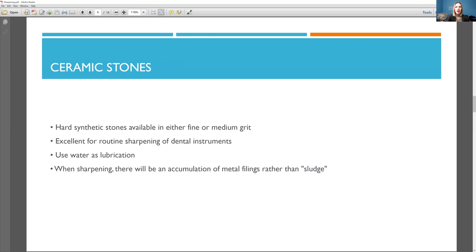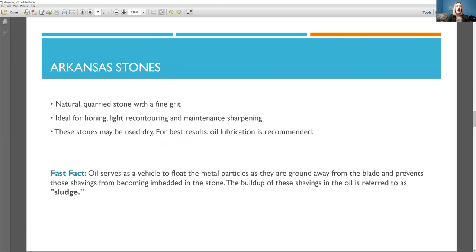Okay. So if you're confused with that, please let me know. The Arkansas, if I'm saying that right, stones. So natural with a fine grit, ideal for honing, light recontouring, and maintenance sharpening. These stones may be used dry. So you could use them dry or with oil. So there's two different types there. So you have to know which stone can be used dry or with oil, which one is with water. And then there was another one with oil. So I'm not going to tell you the answer, but look back in the video if you're not sure.